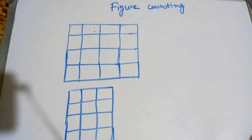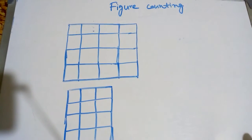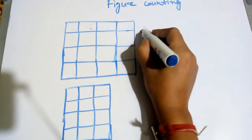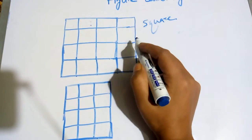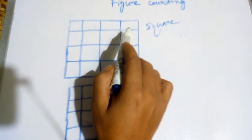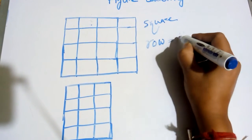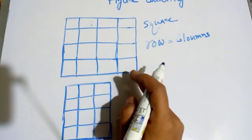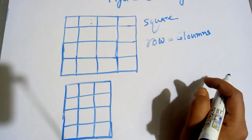Hi guys, today we'll solve some aptitude problems on figure counting. There are two pictures here. The first picture is a square. This square has four rows and four columns. When the number of rows equals the number of columns, we need to calculate how many squares are in the picture.